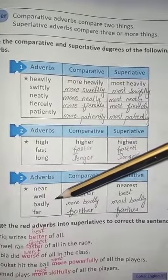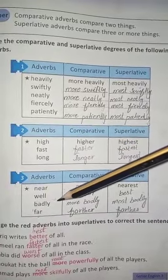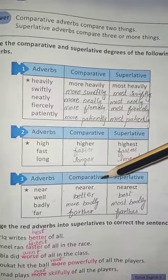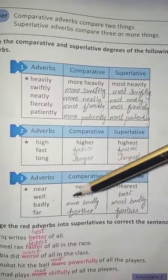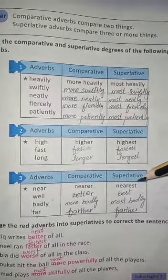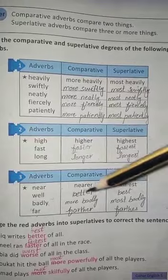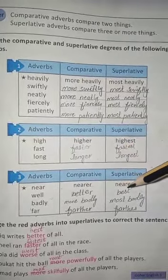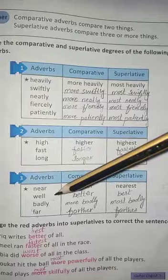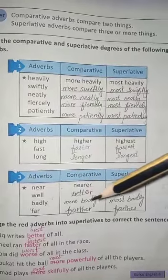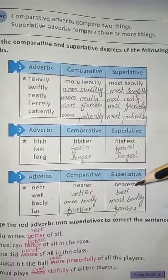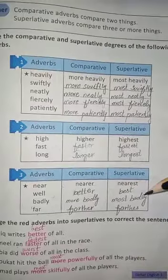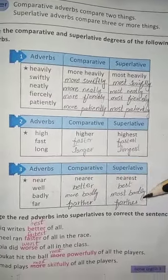Now we study the irregular adverbs. Badly becomes worse and worst, but we can also say more badly and most badly. Far becomes farther and farthest.